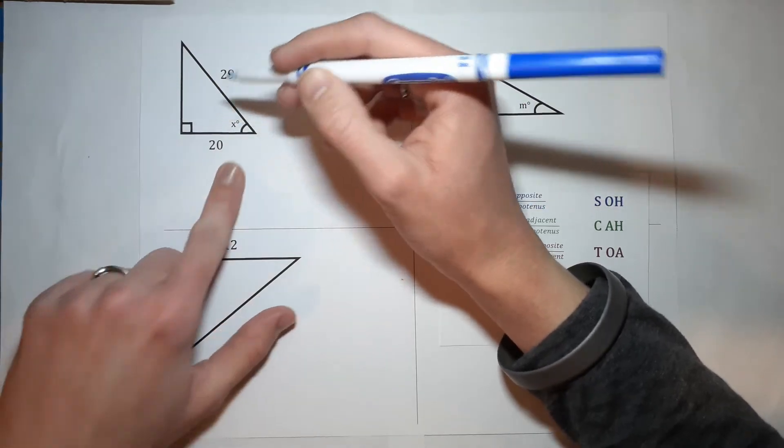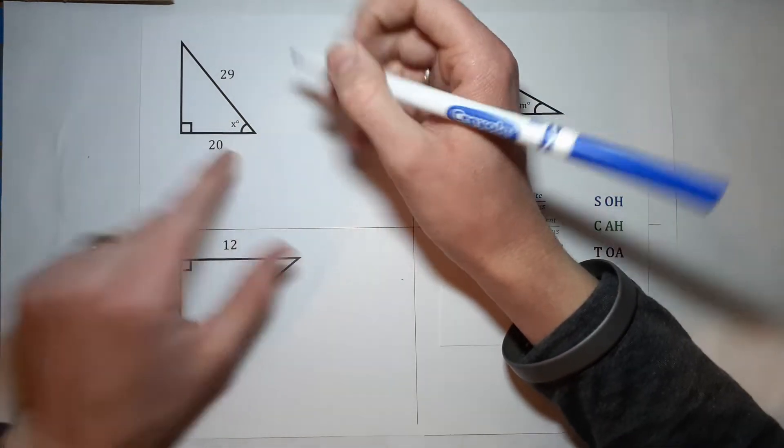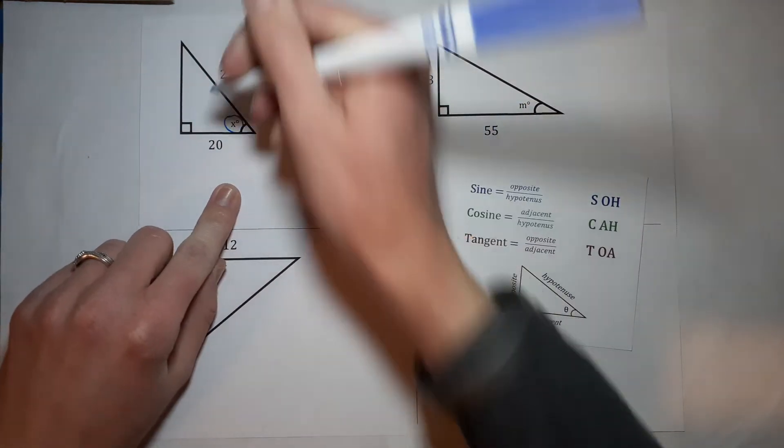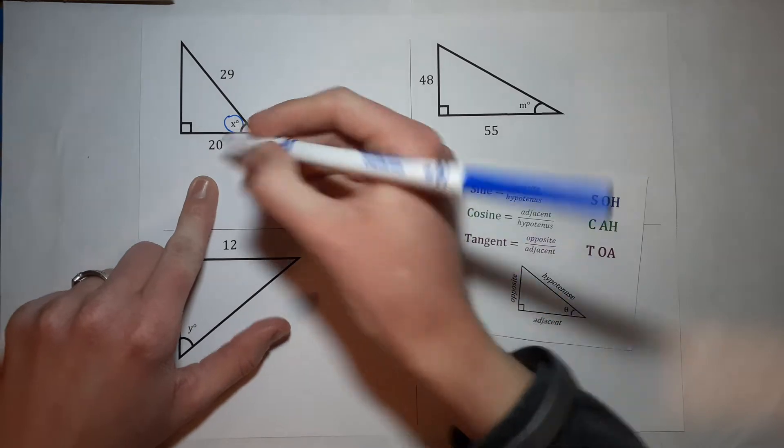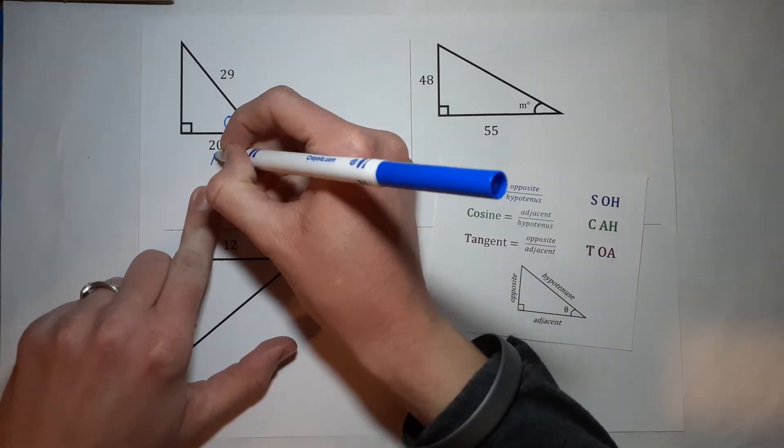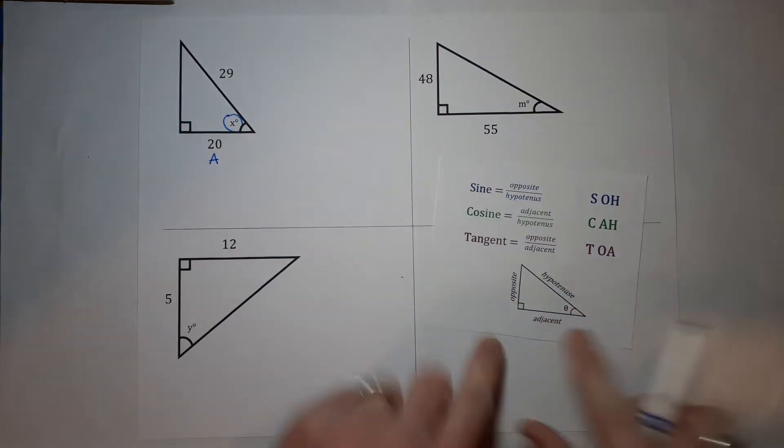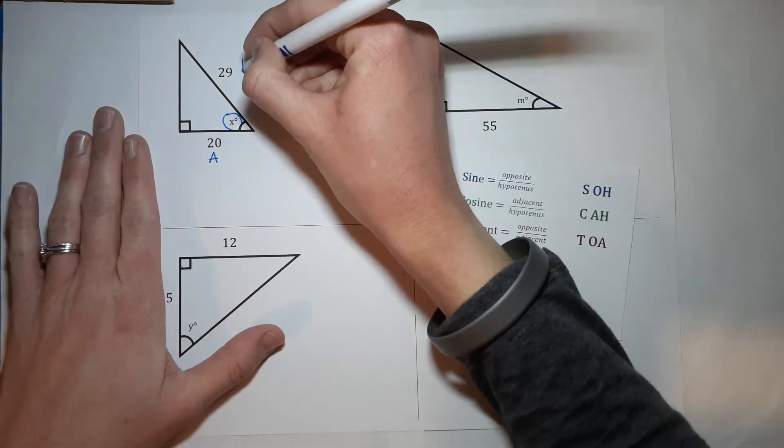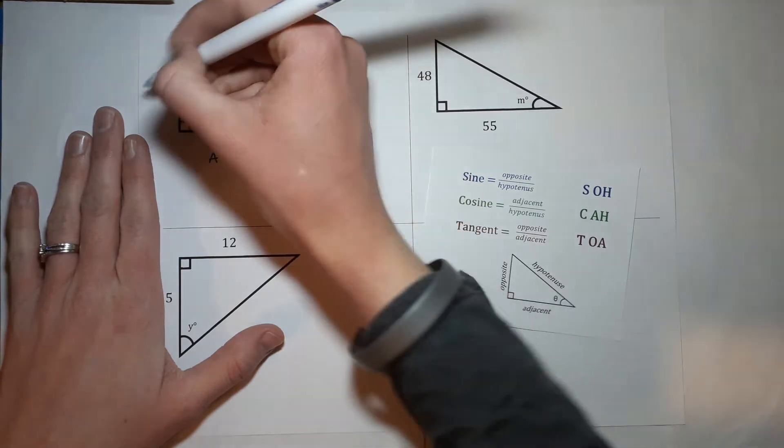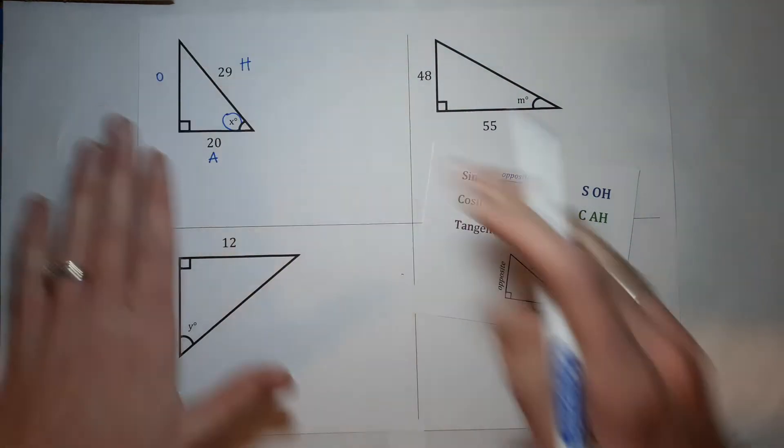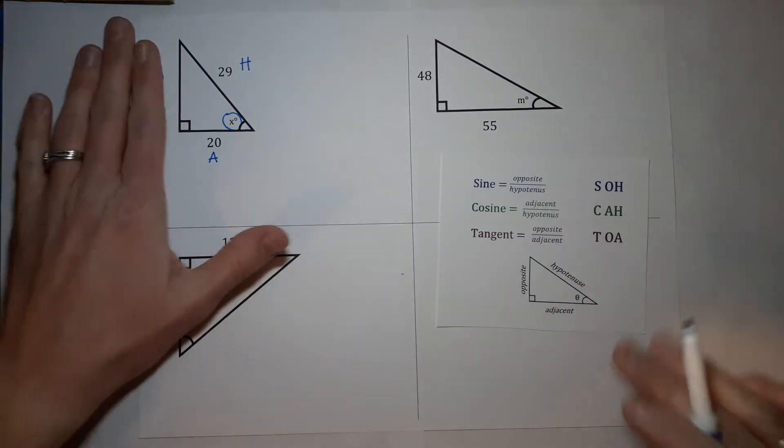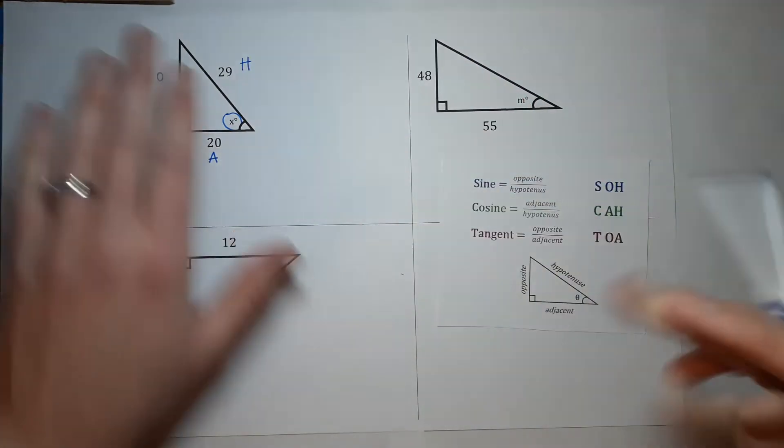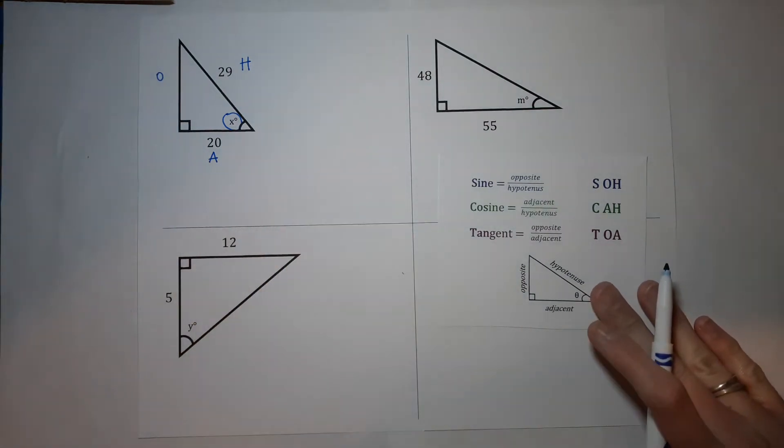So our whole goal here is to know what this angle is and we are going to use these guys. Here's my angle in question. This side is the adjacent side, right? It's the one closest to my angle that's not the hypotenuse. The hypotenuse is the one across from the right angle and this is the opposite side, but we don't really need to worry about it in this particular problem. The ones that we are using are adjacent and hypotenuse, so which one of these uses that? It is cosine.